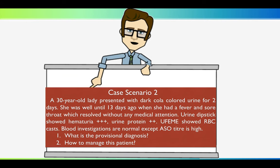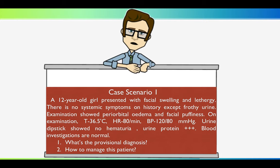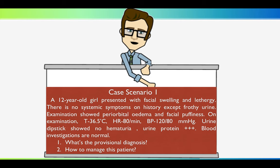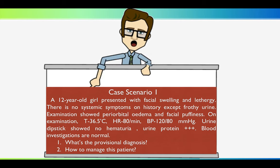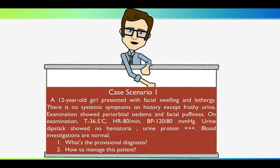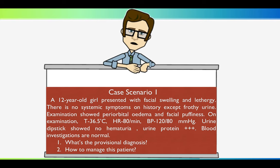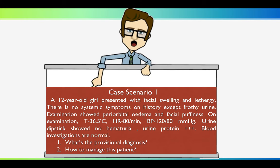Please remember the first scenario and second scenario. To begin with scenario 1: a 12-year-old girl presented with face swelling. On history, there are no systemic symptoms except the patient's complaint of frothy urine. On examination, there is periorbital edema and facial puffiness. Temperature and vital signs are all normal. Investigation: urine dipstick shows protein 3+, blood investigations are normal. So, what is the most probable diagnosis and how to manage this case?